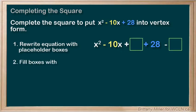Step two. What goes in the box? It's always going to be b divided by 2 squared. So b in this quadratic is negative 10. Negative 10 divided by 2 equals negative 5. We square that to get 25. So 25 goes in both of our boxes.